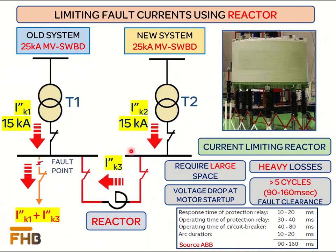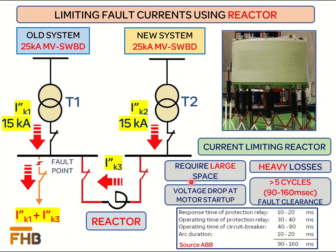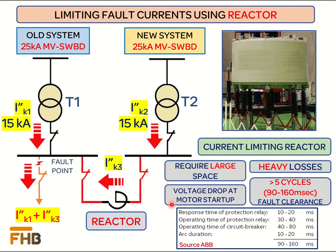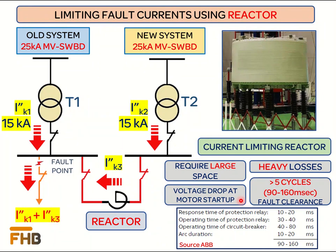However, during normal operation these reactors introduce several problems in the power system. These reactors are large, therefore a separate room is required for installation. Since current continuously flows through the reactor, additional power losses are introduced in the system. If the reactors are installed directly in line with large motors, the voltage drop at the time of motor starting will increase and can cause problems during motor startup. It is therefore suggested not to install reactors in the path of large inductive loads.